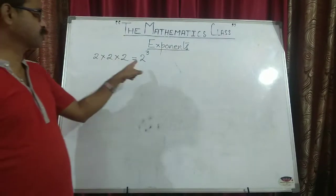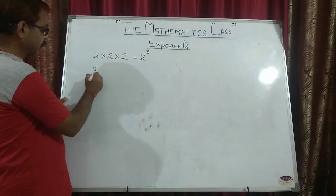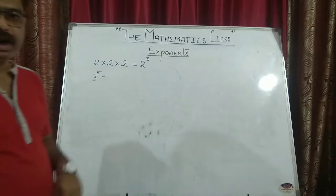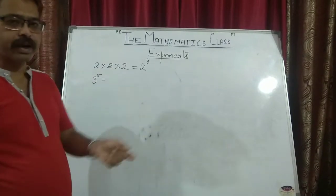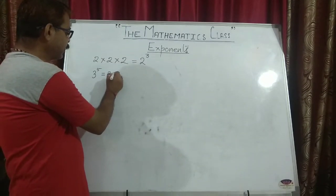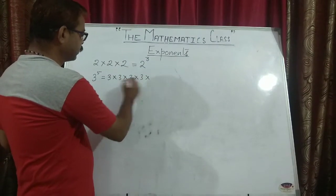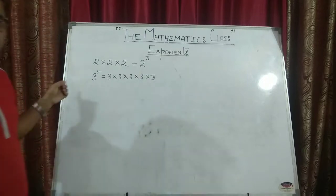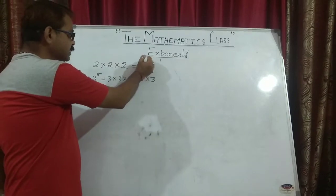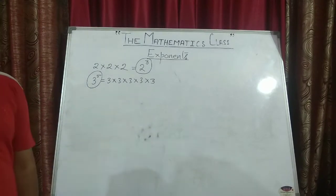Or I say: what will be the value of 3 to the power 5? Conversely, how can we write 3 to the power 5? It means 3 into 3 into 3 into 3 into 3 — 3 is multiplied to itself 5 times. So this is what we are going to study. This is exponents.